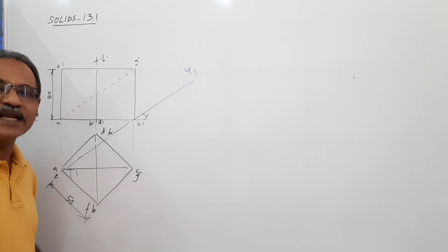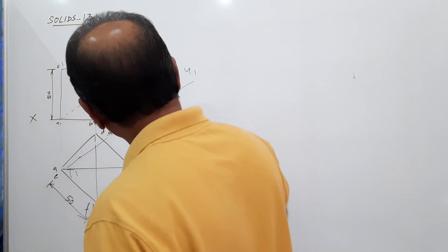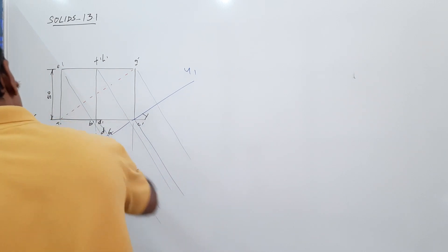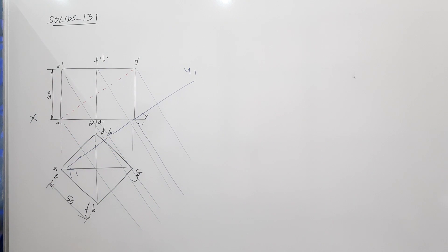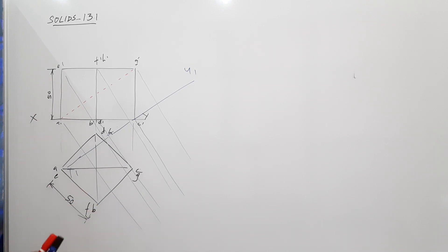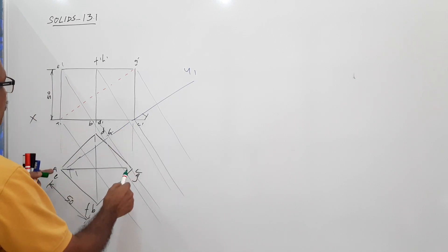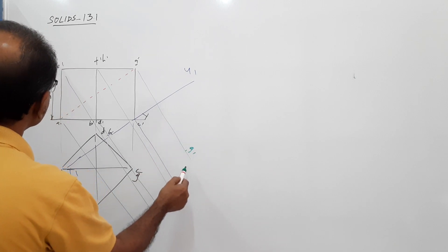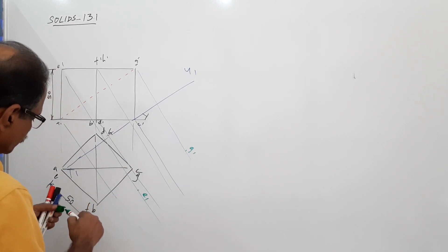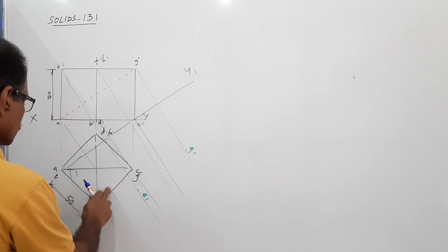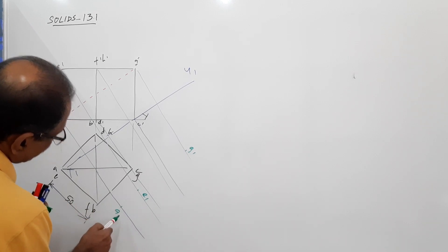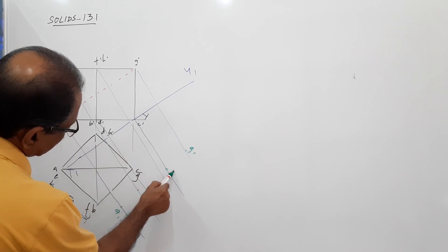Now draw an auxiliary plan. Draw projectors perpendicular to X1Y1 through all these points. Take the distance of the points from X1 and mark on the respective projectors. C, G, A, and E are this much below — on the projectors through C-dash you get G1, through E-dash you get E1, through A-dash you get A1, and through C-dash you get C1.